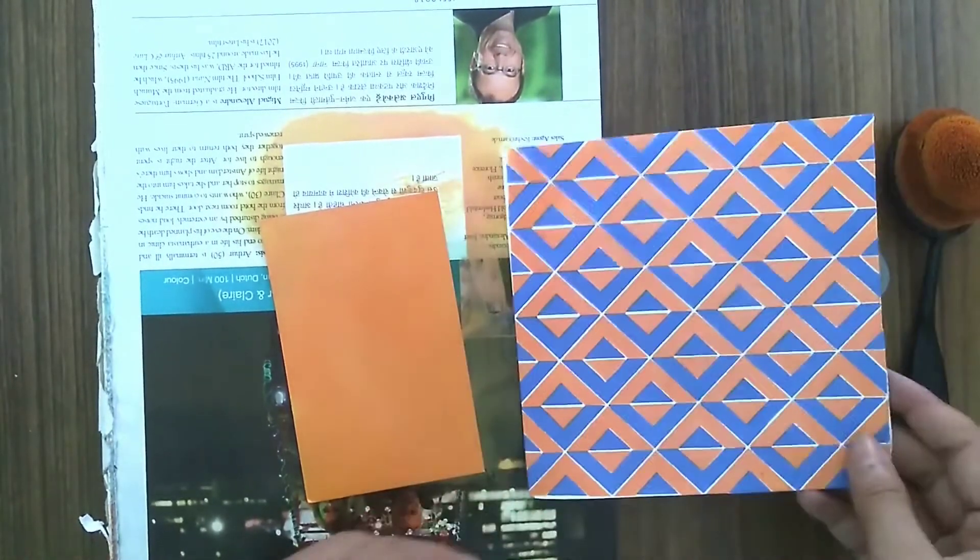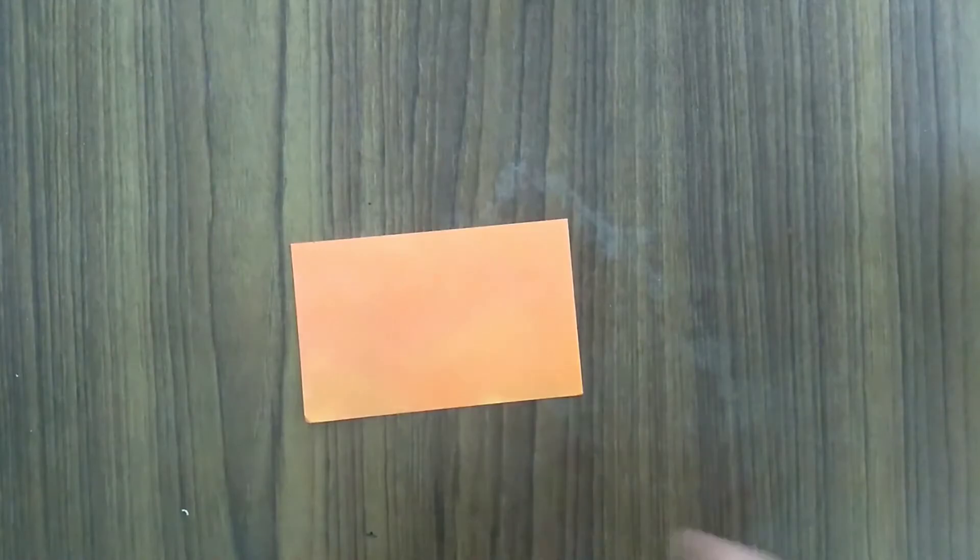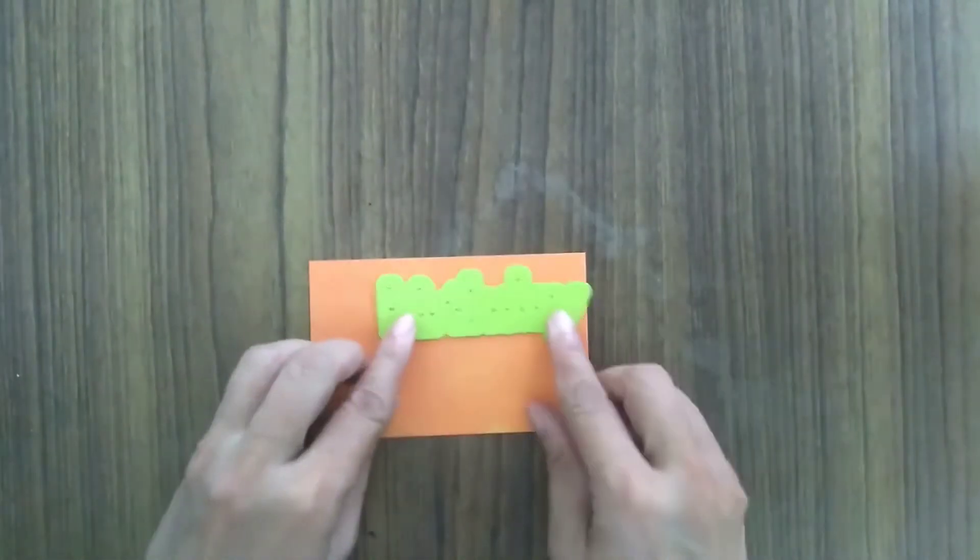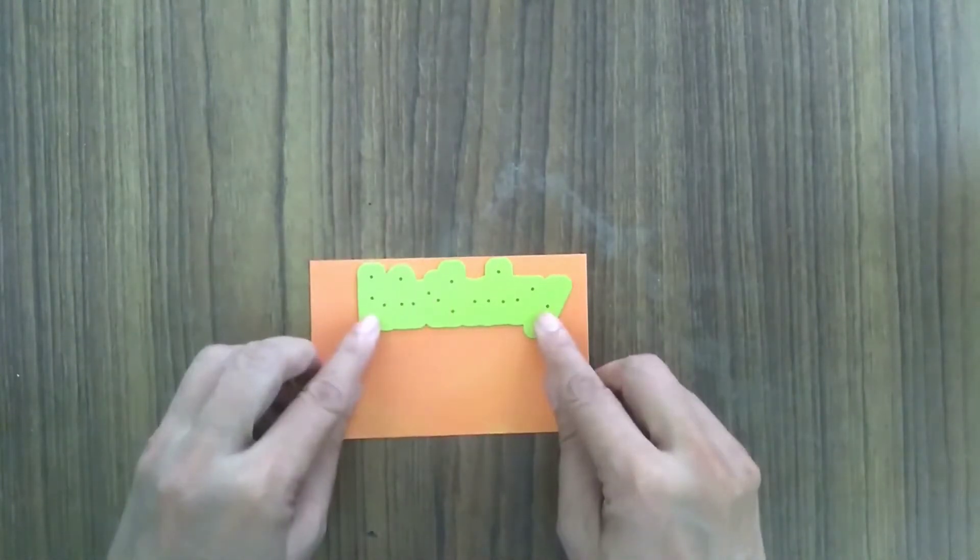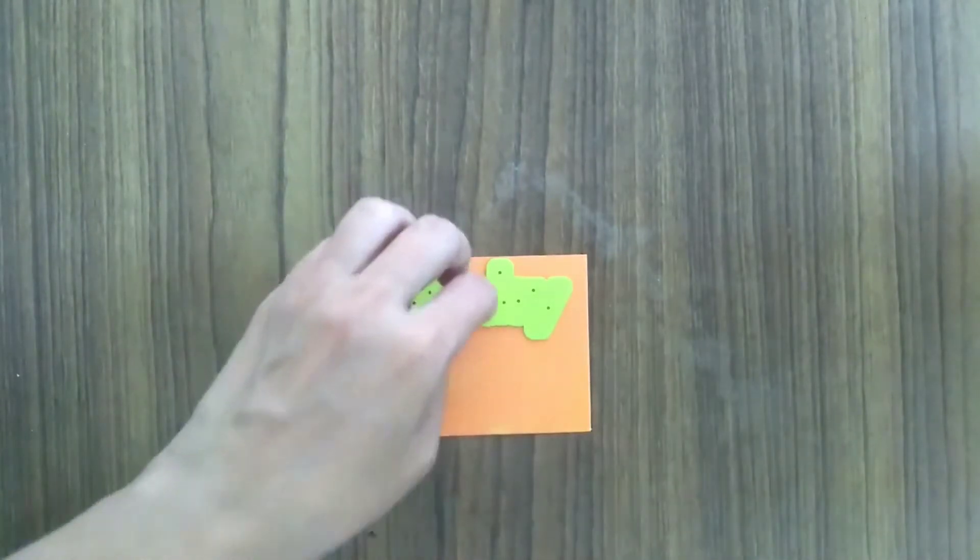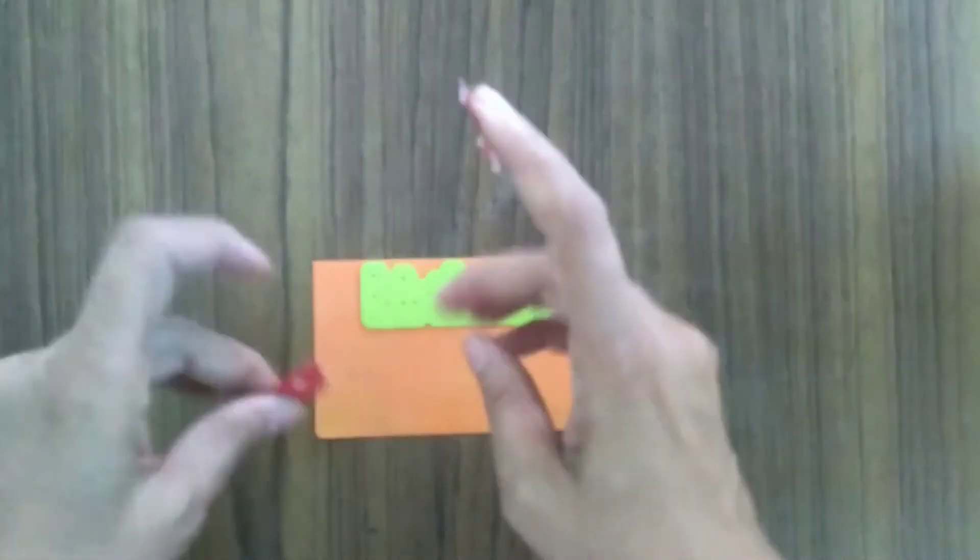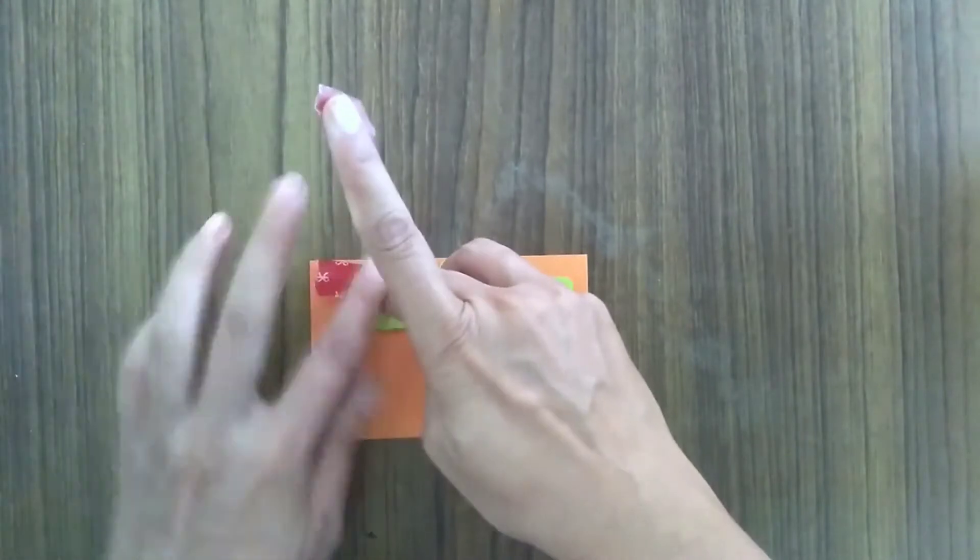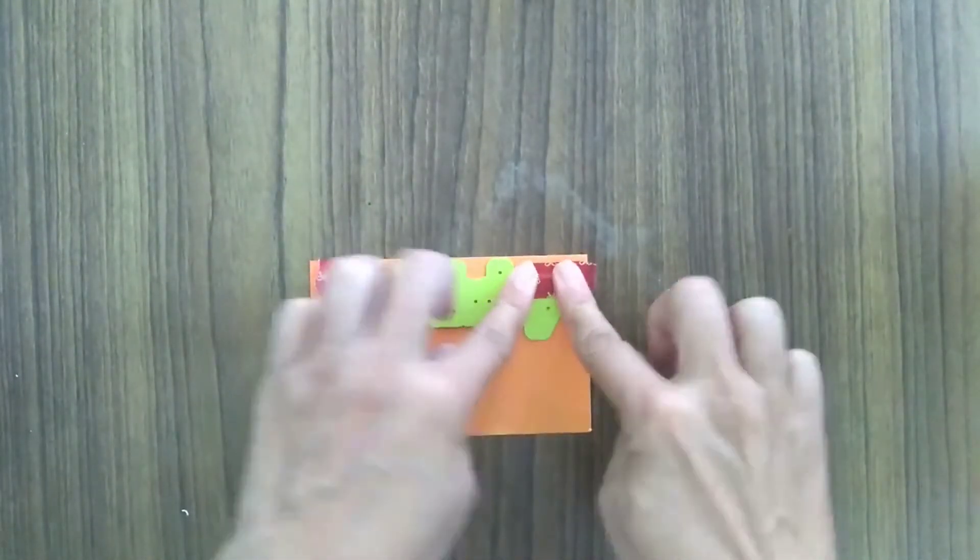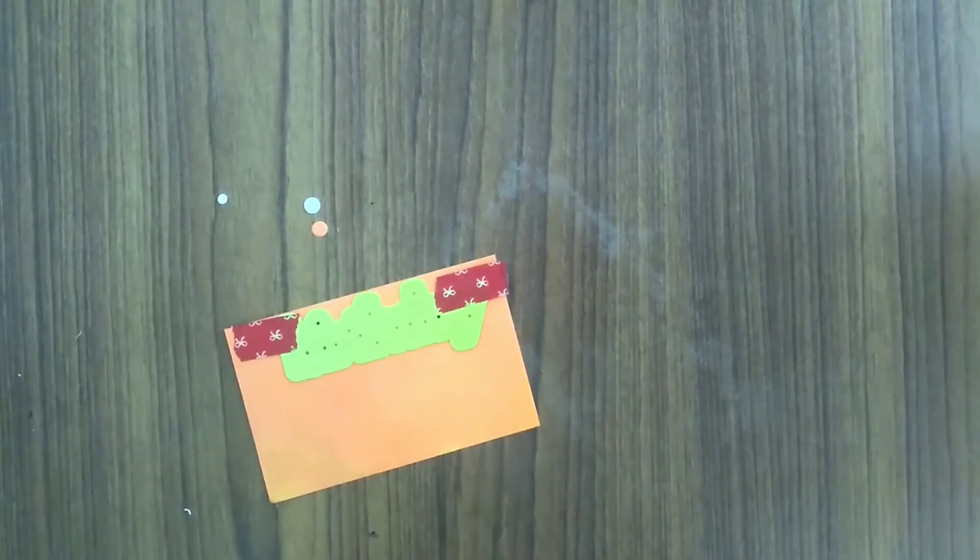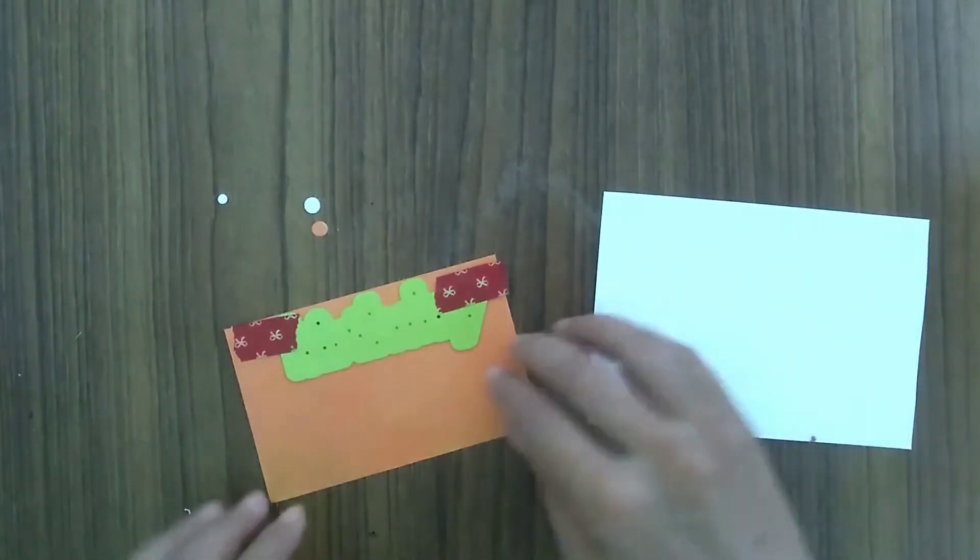The paper has dried. I have a word die which says 'birthday' which I'm going to put at the top, align it with the top edge of the scrap of paper. I just want to make sure that it is straight, and then I'll take some washi tape and I will just stick it down so that when I run it through my big shot, the die doesn't move.